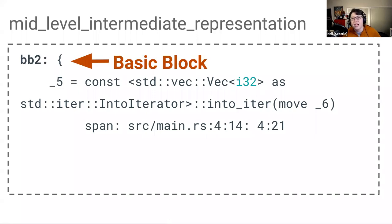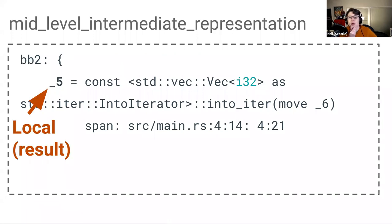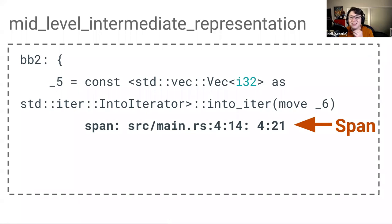Up here in the top left we have our basic block, identified as BB2. Then we have what is called a local. A local in the MIR represents a place in memory — more specifically, a place in the stack frame. In this case, underscore five corresponds to the value of the variable result. And like the nodes in the high-level intermediate representation, we have a span — the piece of the original Rust source code that each node in the MIR corresponds to. Again, if we encounter an error when operating with the MIR, we can still easily refer to what lines in the original source code caused the error.